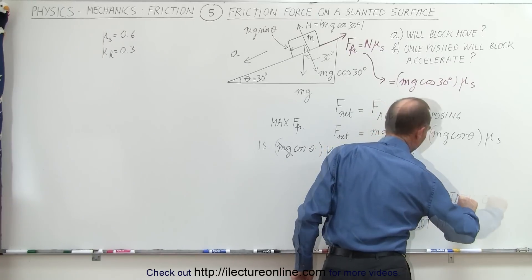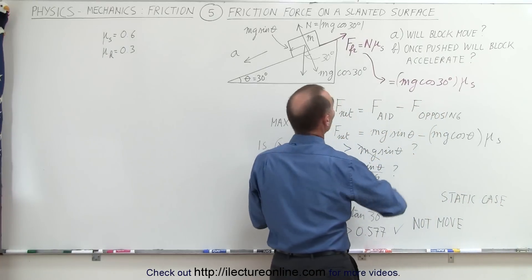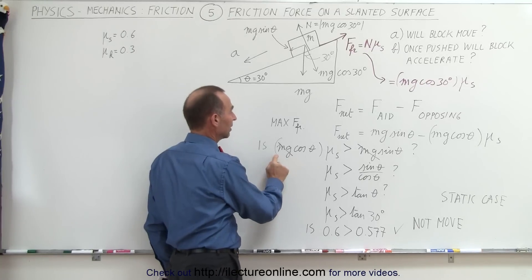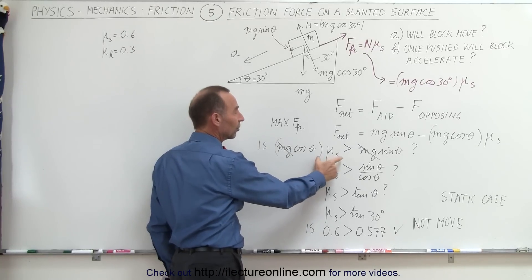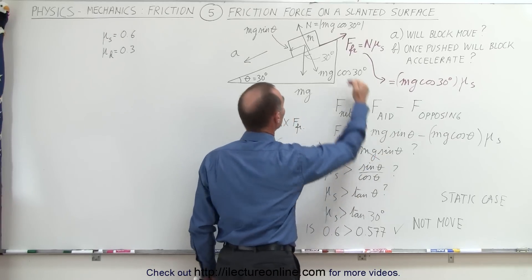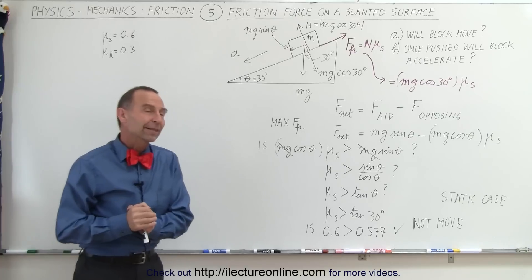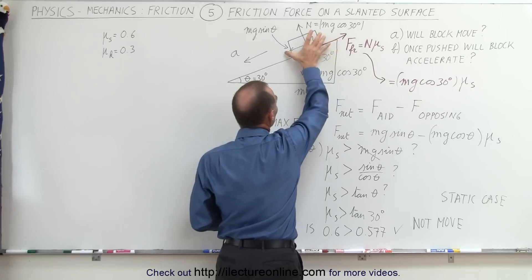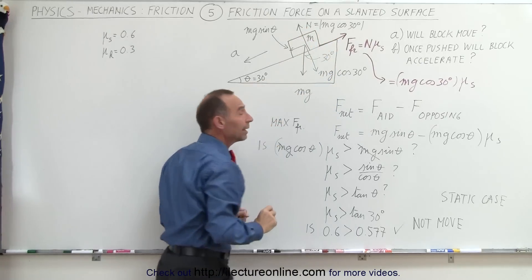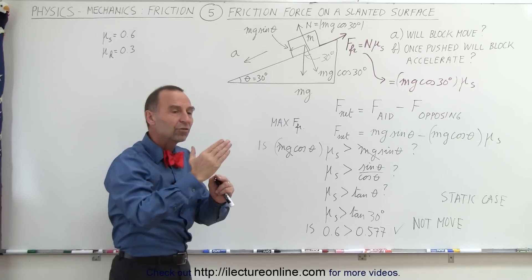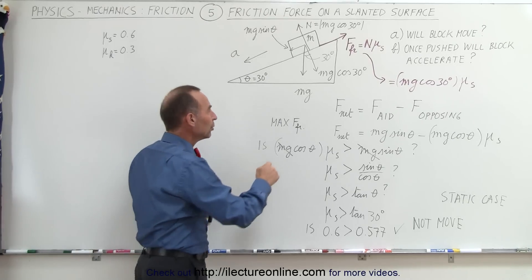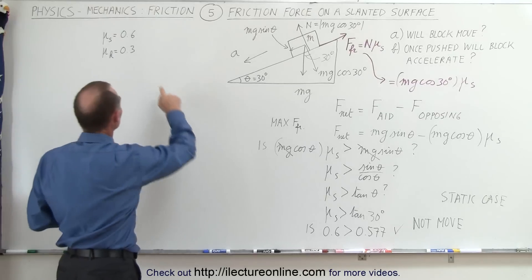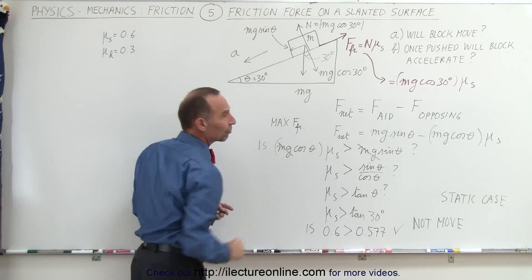So we have a static case. The answer to part a — will the block move? — is no, because the maximum static friction mg cosine theta times mu_s is larger than the force trying to pull it down the incline. Now for part b: suppose we give the block a push so that we momentarily exceed the maximum static friction force and the block begins to move. Once it moves, we no longer deal with the static coefficient of friction, but instead the kinetic coefficient, which is smaller.